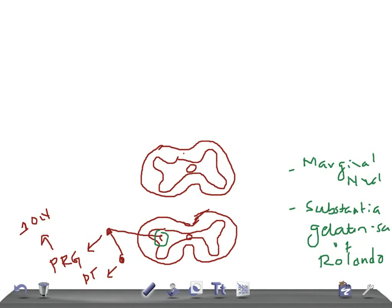The lateral spinothalamic tract has crossed fibers. The axons from the marginal nucleus or substantia gelatinosa of Rolando cross to the opposite side and reach the column of the same segment — they cross and ascend. This is the second order neuron. From the marginal nucleus or substantia gelatinosa of Rolando starts the second order neuron. They cross on the same segment, and a few fibers may ascend one or two segments above.